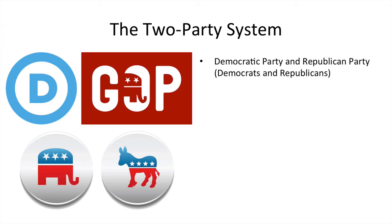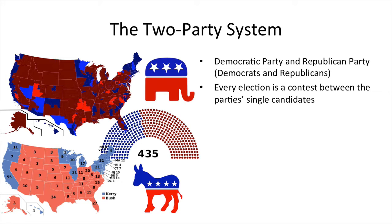Every election in America is basically a contest between a candidate from the Democratic Party and one candidate from the Republican Party. And you can see some color codings here: blue is the color of the Democrats, and red is the color of the Republicans.